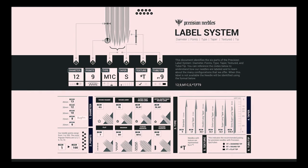Our new Precision Label ID system is a quick and easy tool that can be used to distinguish a needle's unique properties and identify its compatible tips. You can choose from any of our disposable grips to find the perfect match.